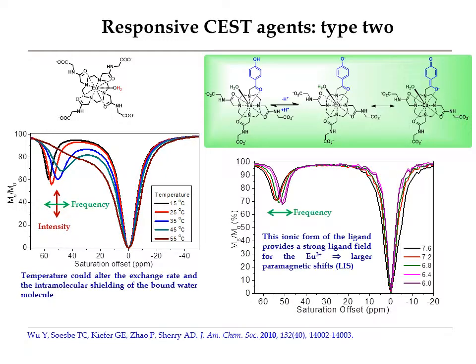Another example is this europium pH sensor. The deprotonation of the phenol group results in the delocalization of negative charge to the ketone oxygen that directly coordinates to the europium metal. This will create a slight increase of the ligand field for the europium metal center, which will shift the resonance frequency of the europium bound water to downfield a little. This property is unique because it will allow us to measure pH by either using the ratiometric method or by following the frequency of the CEST peak. It would be a remarkable achievement if we can make this agent work in vivo for tumor pH imaging.